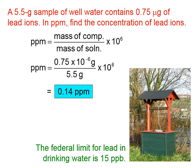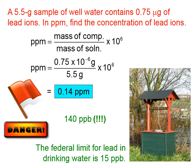As of 2016, the federal limit for lead in drinking water is 15 parts per billion. What would change in this calculation if we were to calculate parts per billion? The only thing that would change is the multiplier on the far right — instead of 10⁶, it would be 10⁹. Which means in this well water, the concentration is 140 parts per billion — three more powers of 10. I don't recommend drinking this well water.